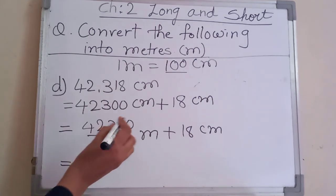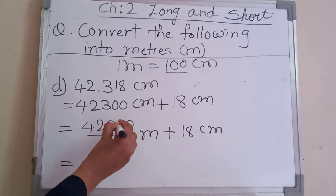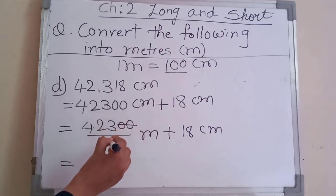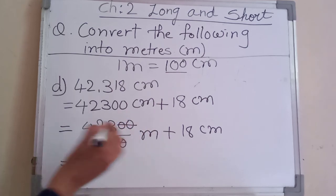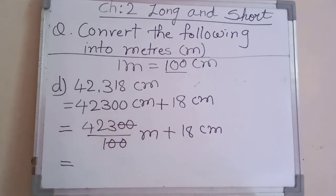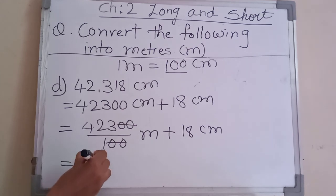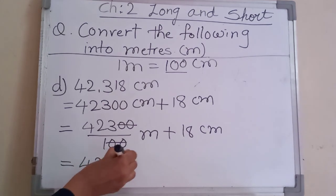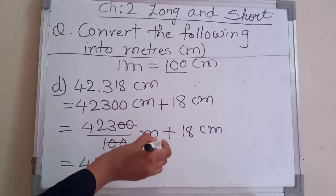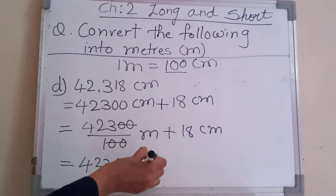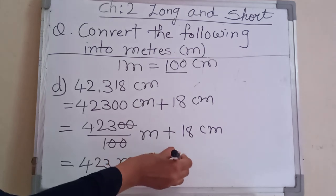Next step: last two zeros in the numerator and last two zeros in the denominator — cut them. The answer is four hundred twenty three meter and eighteen centimeter.